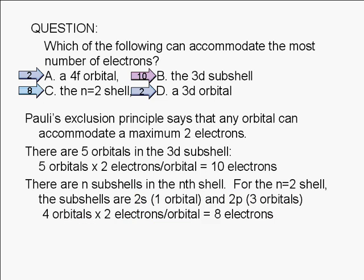Therefore, the correct answer is B. Of the choices given, the 3d subshell can accommodate the most number of electrons.